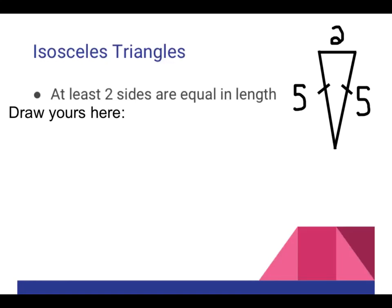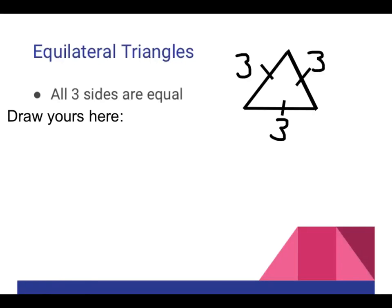An equilateral triangle has three equal sides. This means all three of the sides are the same length. Edit this slide to make your own equilateral triangle that has different lengths as mine, but that is still an equilateral triangle.